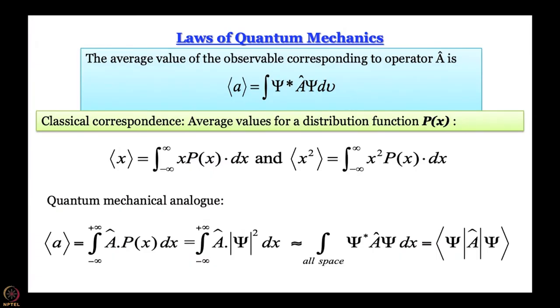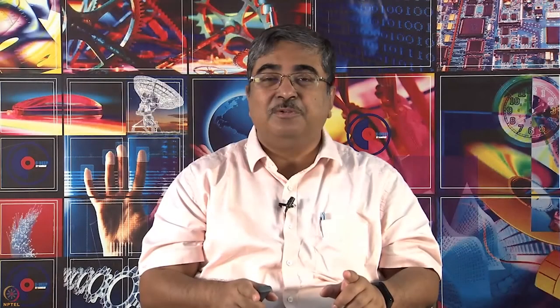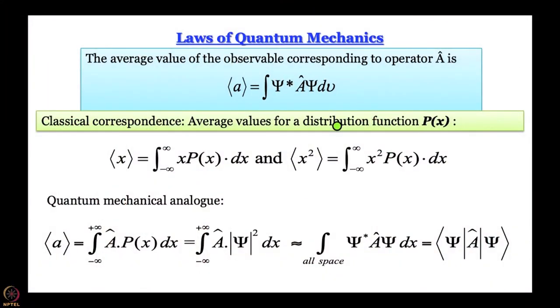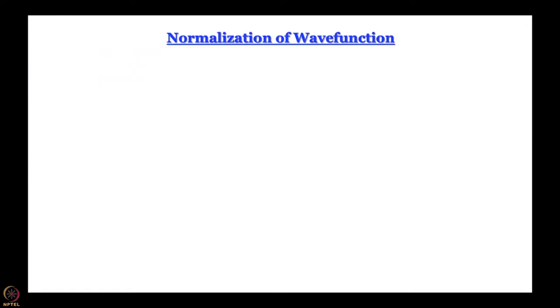Once again this description is not complete — we will come back to the full description. This expression is really the numerator; there can be something in the denominator provided the wave function does not satisfy a particular condition, and that condition is normalization. Once we accept Born's interpretation of the wave function, we also have to accept that these wave functions must be normalized.